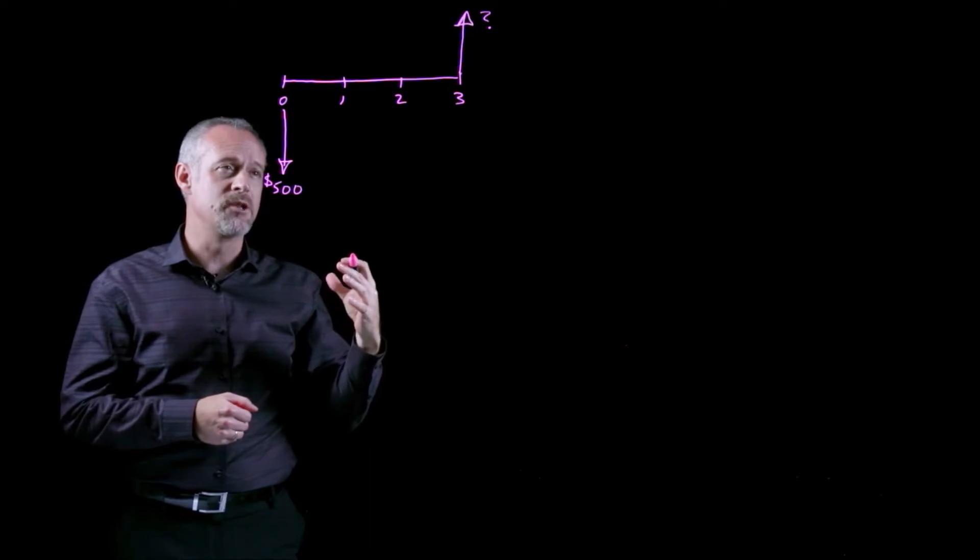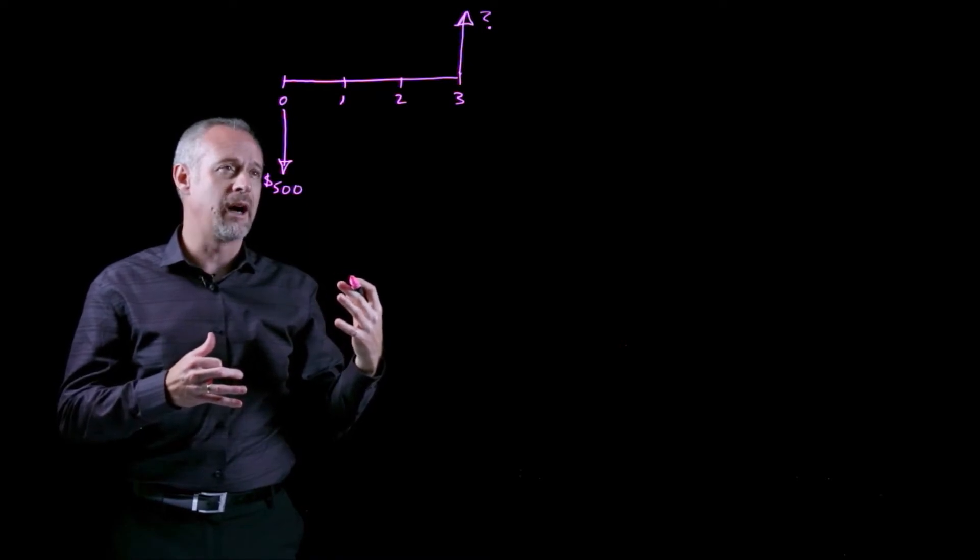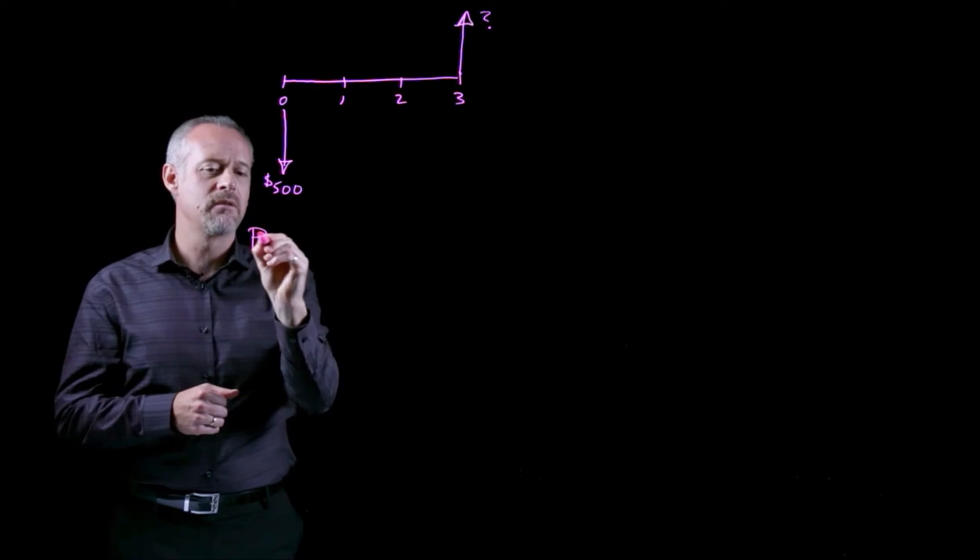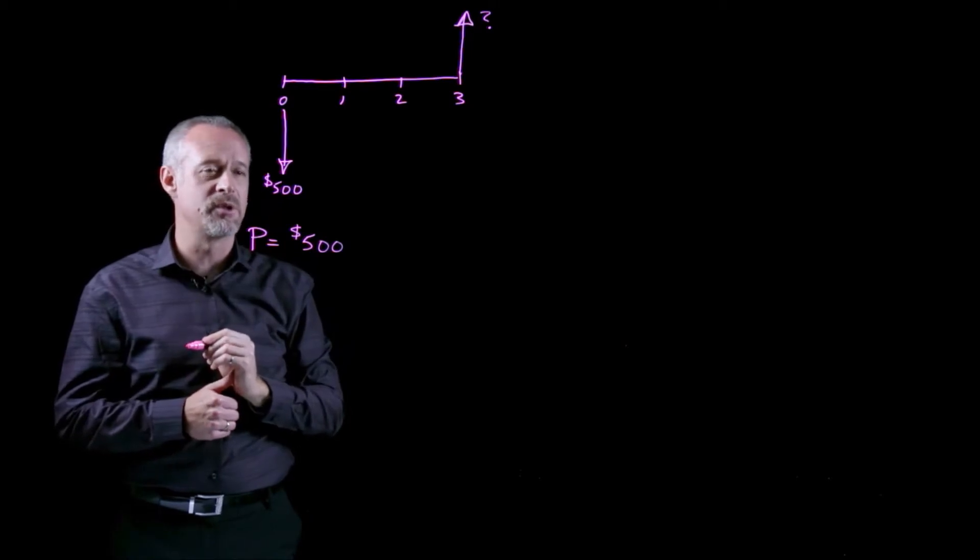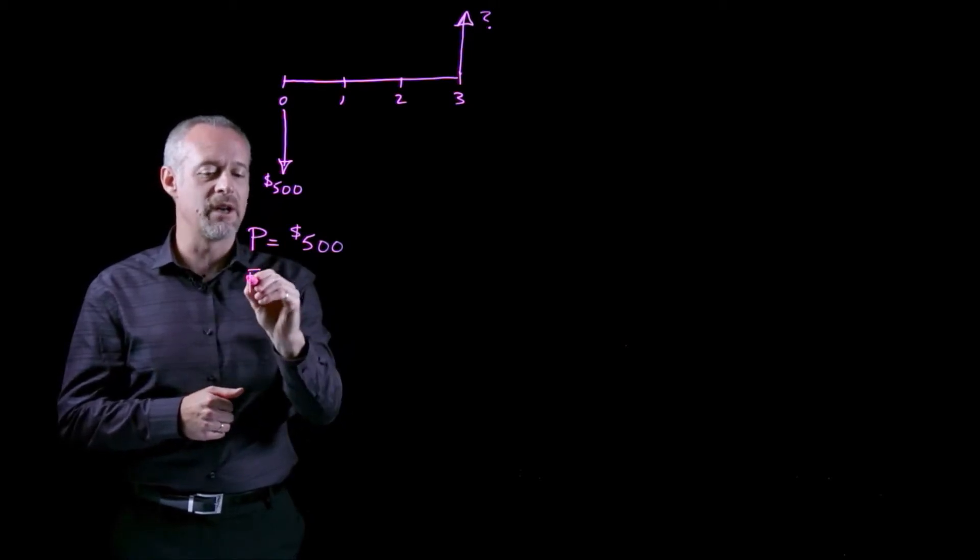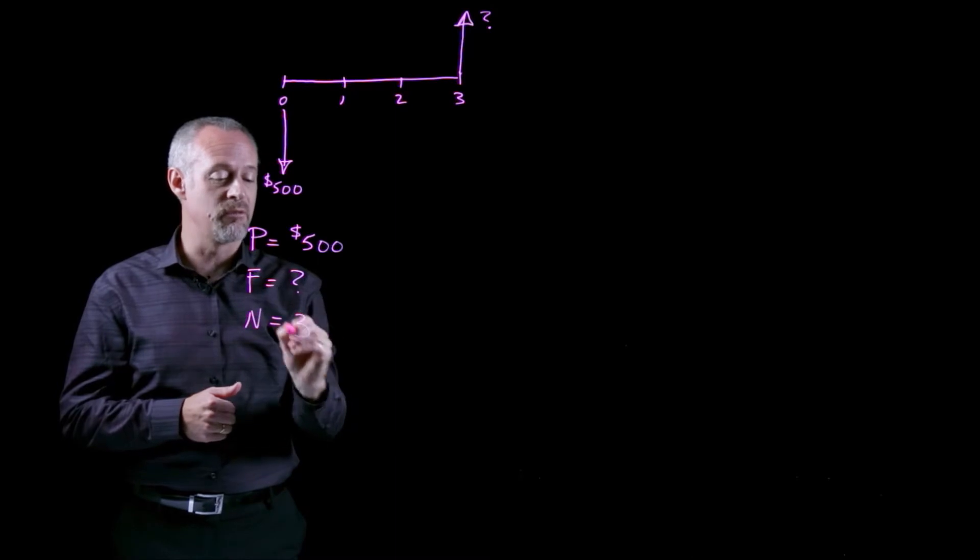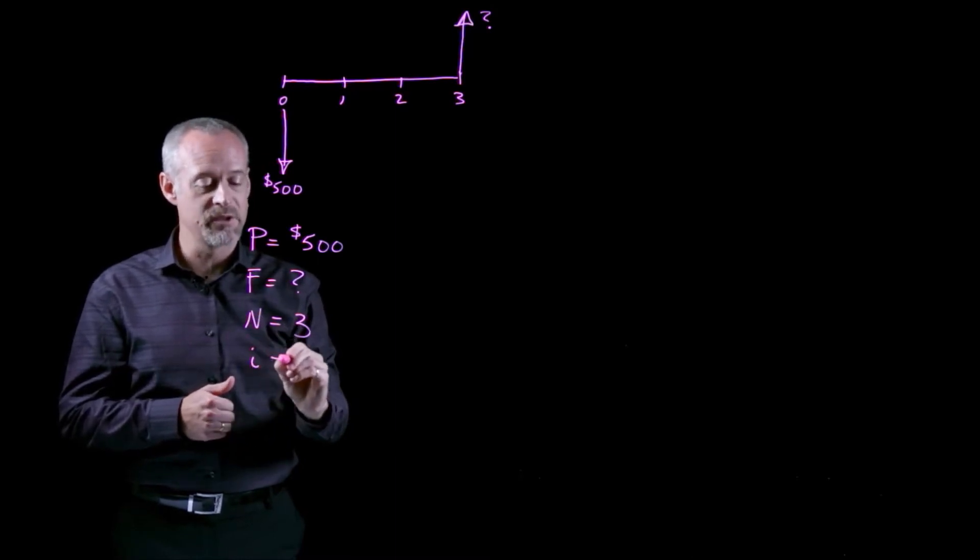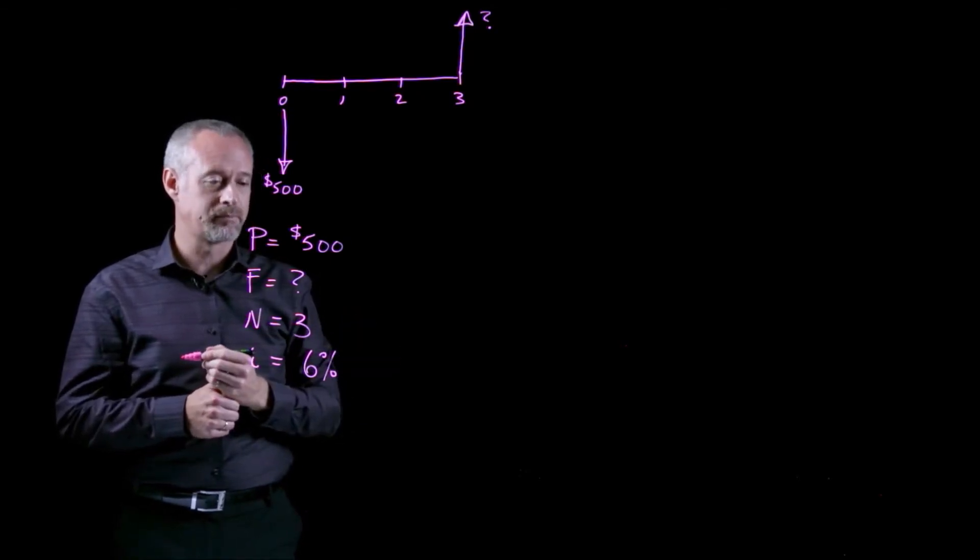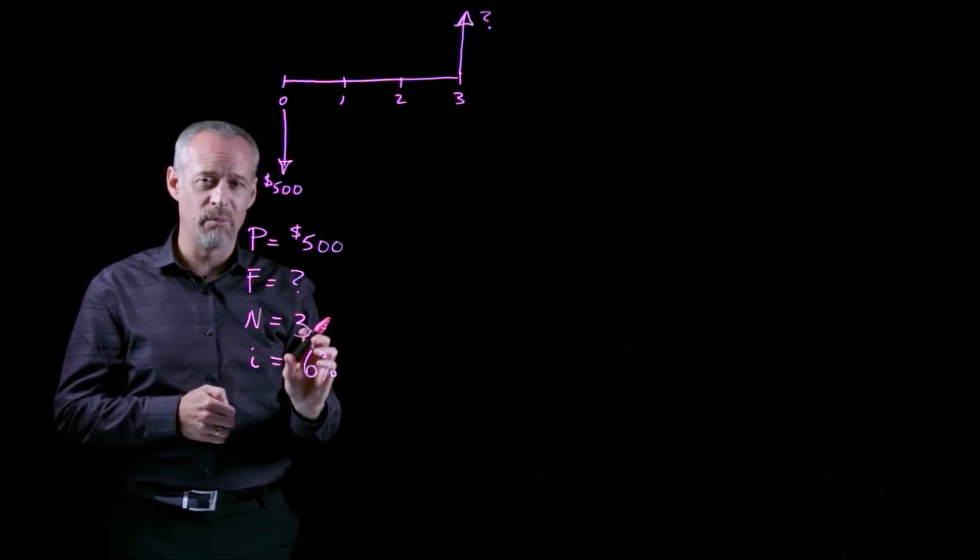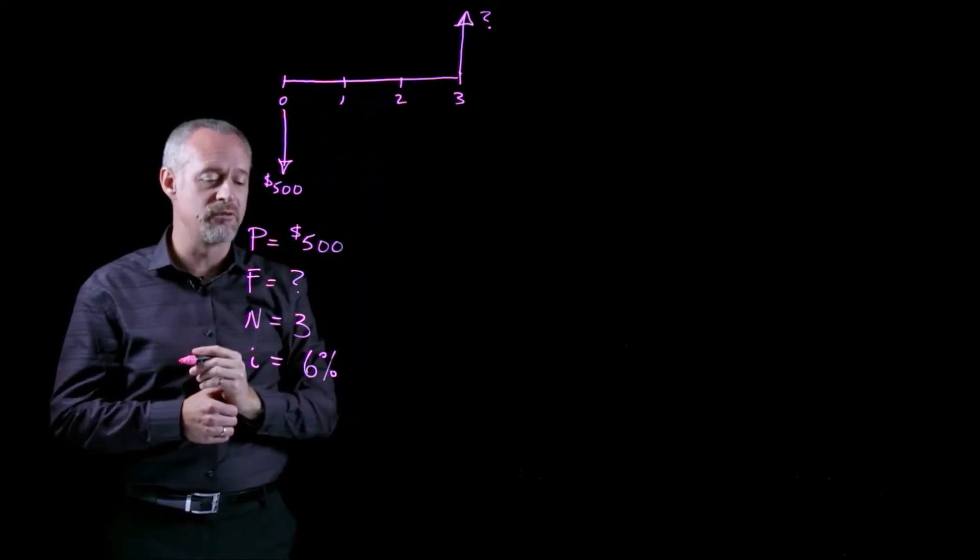The next thing we should try to do is put it in the language of engineering economics time value of money problems. For this particular problem, the P, the present value, is going to be $500, and it occurs at time t equals 0. That's always a good clue. What I'm interested in is the future value. The number of compounding periods will be 3, because it's 3 years. The problem tells me that the interest rate is 6% compounded annually. For now, let's just assume that 6% is compounded for each of the three years.